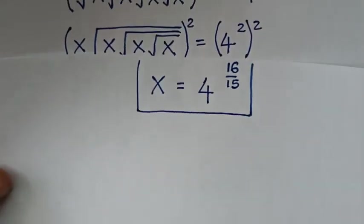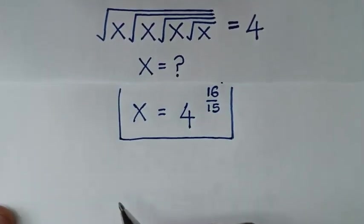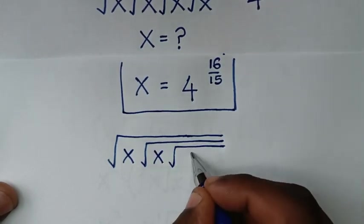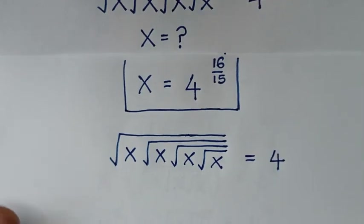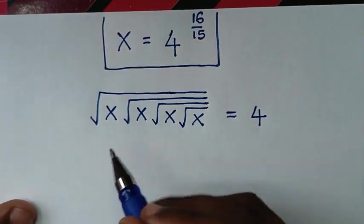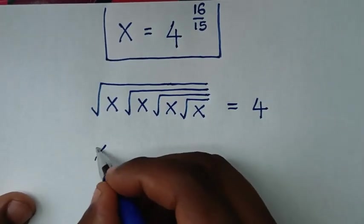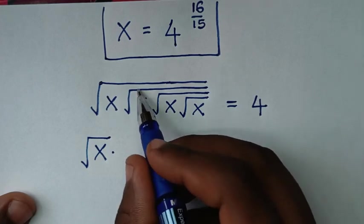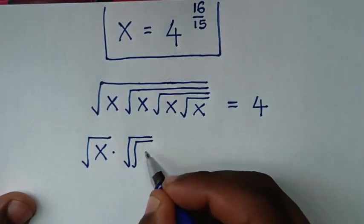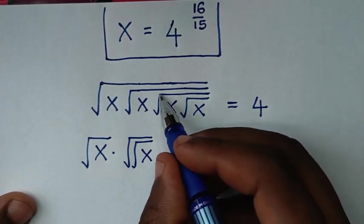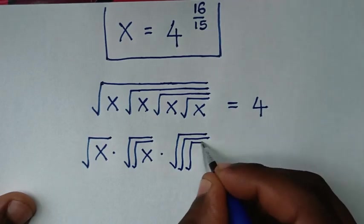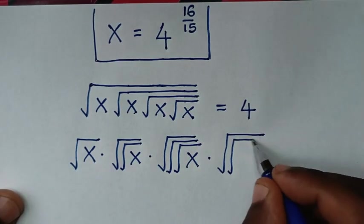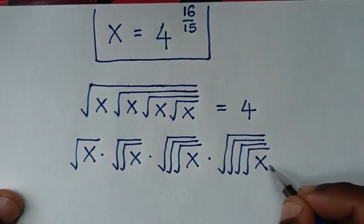Now let's solve it in another method. Let's write this problem, which is square root of x under square root of x under square root of x under square root of x is equal to 4. In this second method, this x is under 1 square root, this x is under 2 square roots, this x is under 3 square roots, and this x is under 4 square roots. So it will be square root, square root, square root, square root of x is equal to 4.